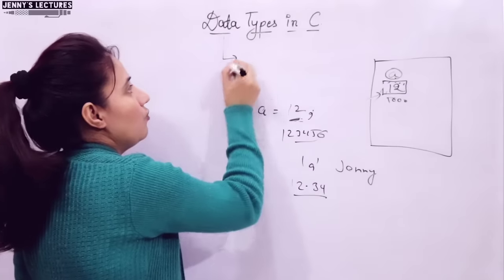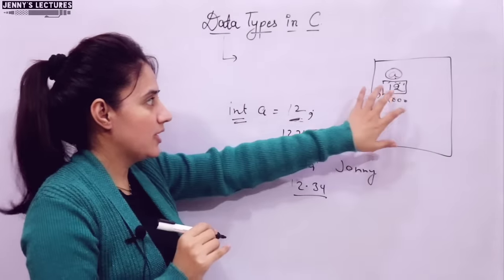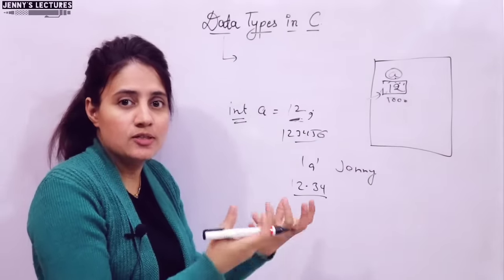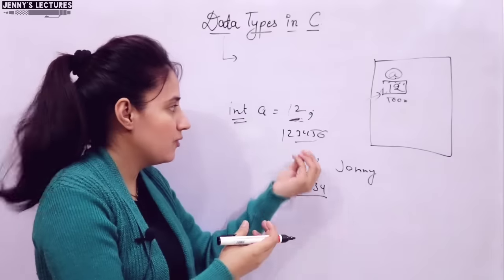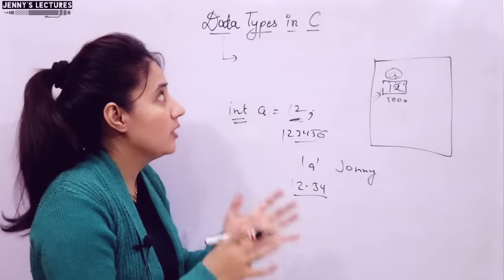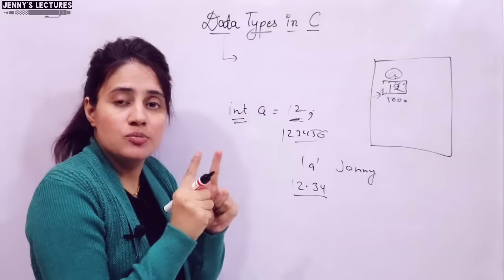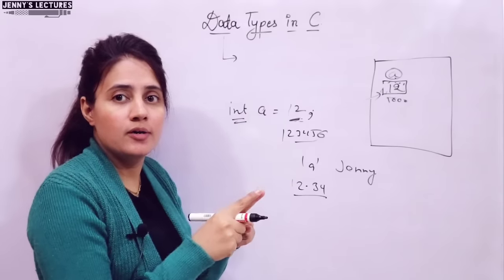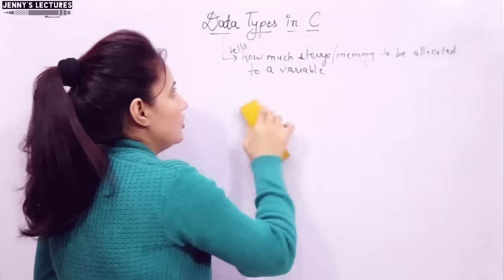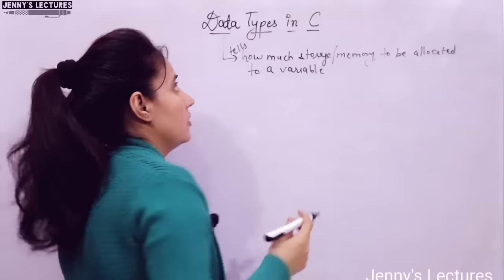Data type will tell, first, the type of data — which type of data you are going to store, whether it's numerical data, floating point, integer, or character, or a string. Second thing, how much memory should be allocated to that data. We use data types to declare variables as well as functions.